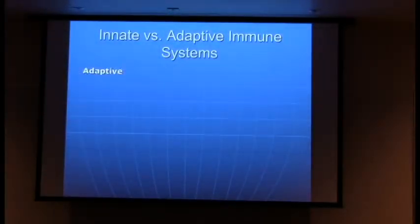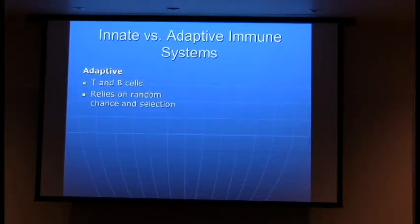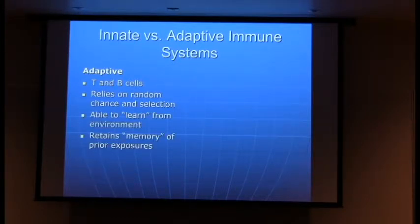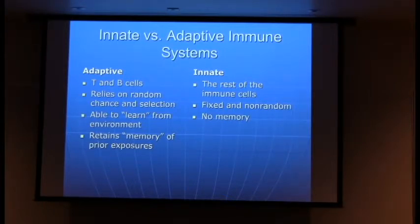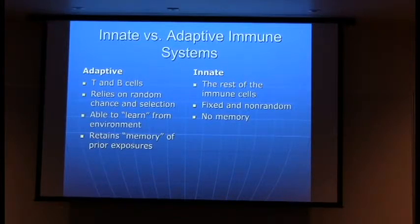To finalize my Immunology 101 lecture — the immune system can be divided into two major arms. The adaptive immune system, made mostly of T and B cells, relies on random chance and selection: it develops by chance but gets heavily selected to be useful. Consequently, it can learn from its environment and remember what it's seen — vaccines are really important for educating your adaptive immune system. The innate immune system consists of the rest — more like foot soldiers, fixed and non-random, totally incapable of memory. This is what invertebrates and plants use to defend themselves from infection.